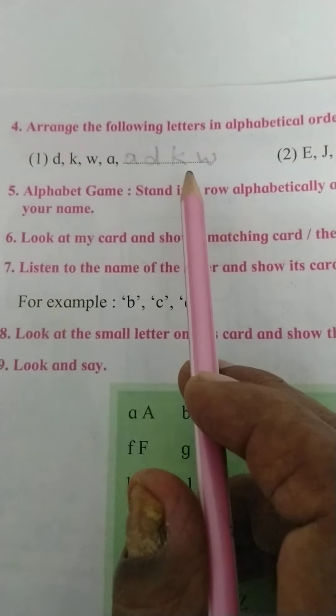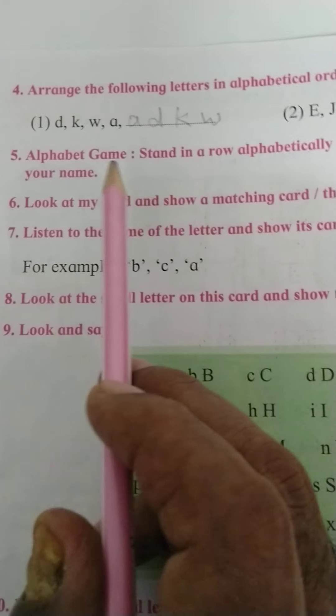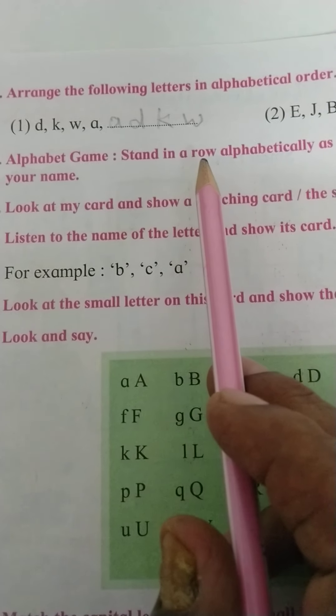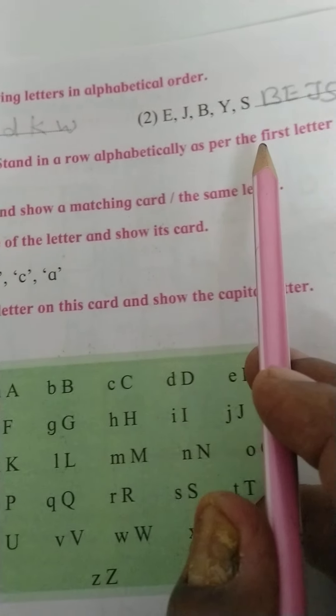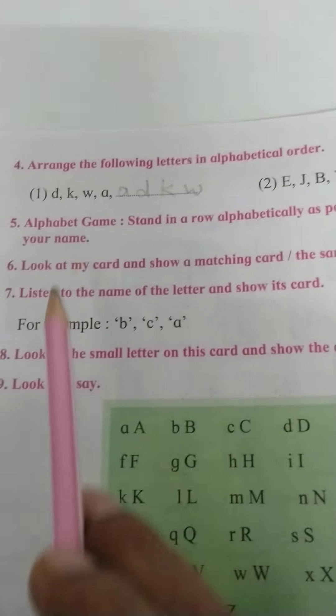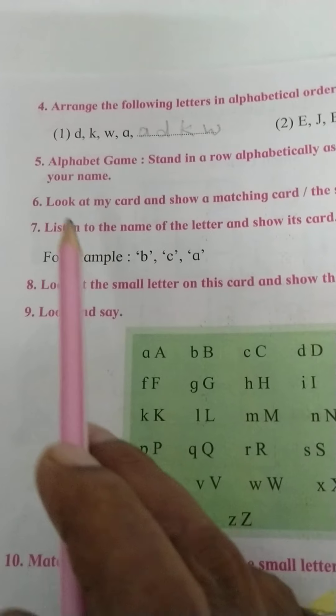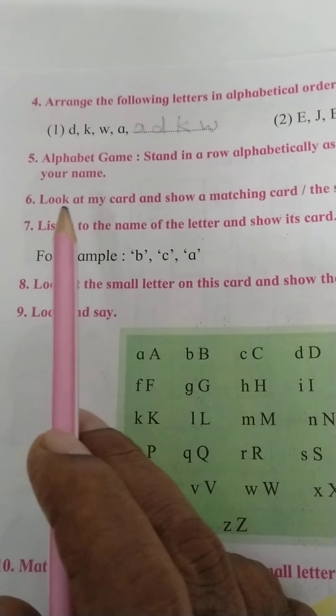See here point number 5, alphabet games: stand in a row alphabetically as per the first letter of your name. It is a classroom game. When you are in the classroom, then it will be played.